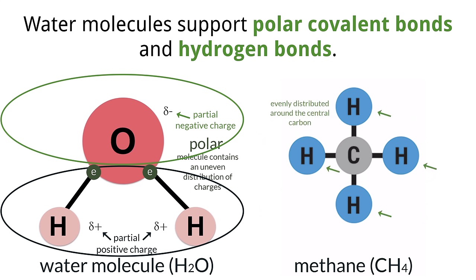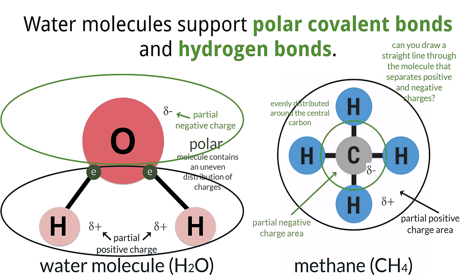An easy way to tell if a molecule is polar or not is to ask yourself, can I draw a straight line through this molecule and have all positive charges on one side and all negative charges on the other? If you can do that, the molecule, or at least the part of the molecule, should be polar. We can see that a line can be drawn through the water molecule to separate the charges, but there is nowhere I can accomplish that with the methane molecule, which means it is nonpolar.